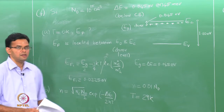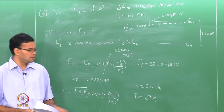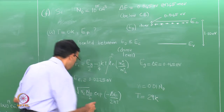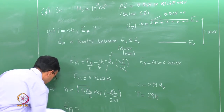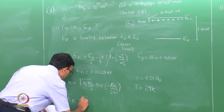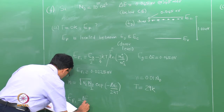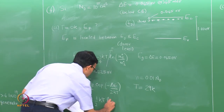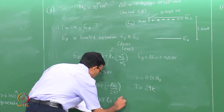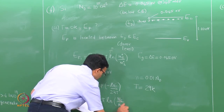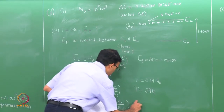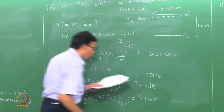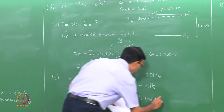We can also calculate the position of the Fermi level. Using the intrinsic semiconductor expression: E_fi = ΔE/2 − (1/2) · kT · ln(N_c / (N_d/2)). Plugging in numbers, this works out to be 10.1 meV above E_d.